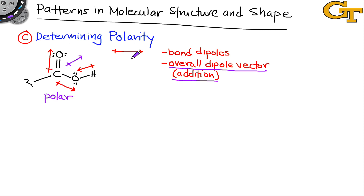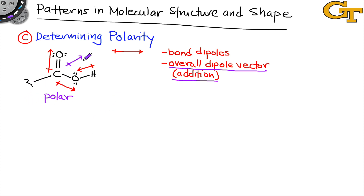One last thing about determining polarity: we've essentially ignored the influence of whatever this functional group is attached to, because this is typically carbon, which is more or less electroneutral in most cases. If a strongly electronegative atom like oxygen or nitrogen is connected there, it may be worth considering, but in this case where we had just carbon connected to carbon, we could safely ignore it. So in part C you'll determine bond dipoles and an overall dipole vector for each functional group drawn in part A, and determine whether the functional groups are overall polar or non-polar.